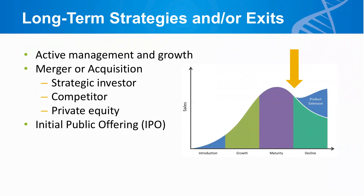Thinking longer term — what are the different ways that companies can either continue to grow and operate, or maybe exit? It depends on how the business is structured and the long-term goals. Some companies just continue to grow and mature and actively manage that growth. Once the company is profitable, its owners really start to earn additional revenue. Some individuals or groups just want to keep growing and managing that company in a privately held way.